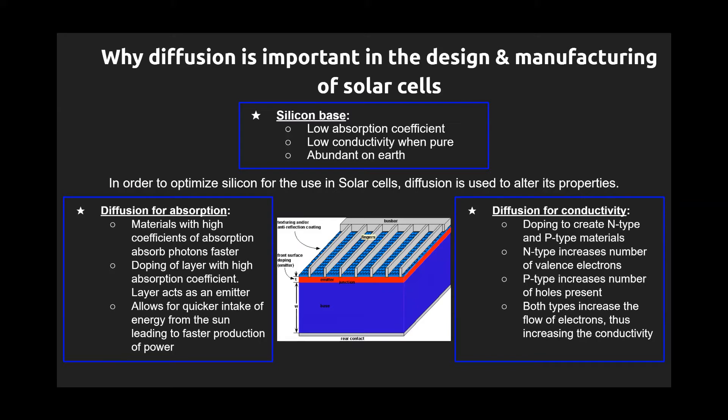Diffusion is very important in being able to create solar cells cheaply because we can use a silicon base and simply alter its properties where needed to produce an efficient solar cell. Now Joe will go more into the aspects of diffusion.